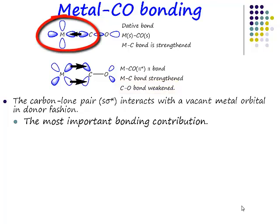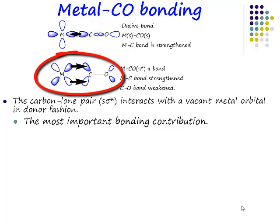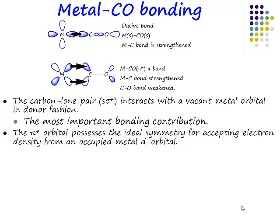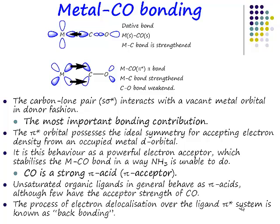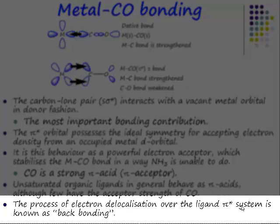Normally you consider a ligand to be donating electron density from the ligand to the transition metal. If you have a π acceptor ligand, it's accepting electron density from the transition metal into its π* anti-bonding orbitals, and that has the effect of weakening the carbon-oxygen bond. This is a bonding contribution with respect to metal-carbon, but anti-bonding with respect to the carbon-oxygen bond. This process of donating electron density from the metal to the ligand is known as backbonding.